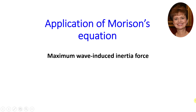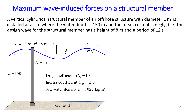Hello everyone, my name is Nina. In today's video I will show you how to calculate the maximum wave-induced inertia force using Morrison's equation. Our problem is a vertical cylindrical structural member of an offshore structure with diameter 1 meter, installed at a site where the water depth is 150 meters and the mean current is negligible. The design wave has a height of 8 meters and a period of 12 seconds.